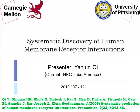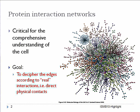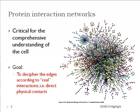We know that protein-protein interactions are very important. If we represent proteins as nodes and edges represent the interaction between proteins, we have what is called the protein interaction network. This graph is critical for the comprehensive understanding of the cell.